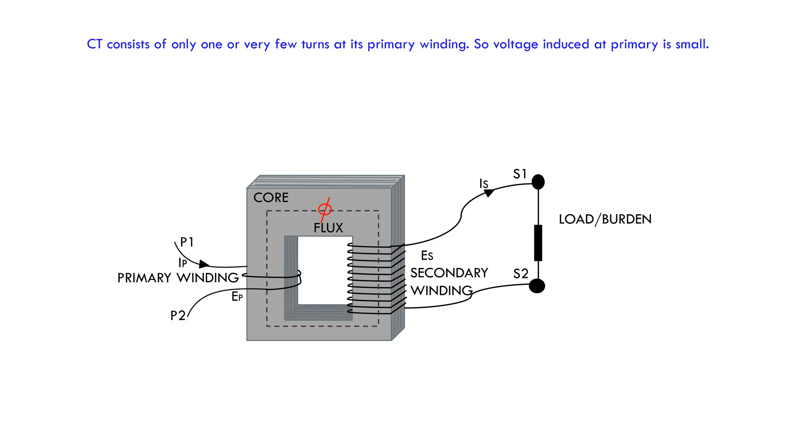Can I repeat, current transformer steps down current from higher value to a lower value for the purpose of measuring current and relying protection and control of the line in which the CT is connected in series. And CT is only operated at short-circuit condition of secondary.